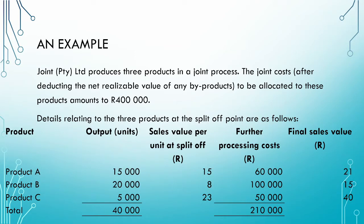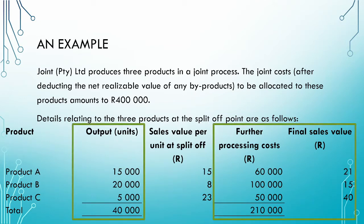We are given details of the three products at the split-off point: the output in units, the sales value per unit at the split-off point, any further processing costs incurred, and the final sales value after further processing. Because the constant gross profit percentage method focuses on the output, further processing costs, and final sales value — like the net realizable value method — we can ignore the sales value at split-off point information.